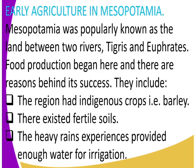Now we must get to know what Mesopotamia is and where it was found. Mesopotamia was popularly known as the land between two rivers — River Tigris and River Euphrates. These were the two rivers that Mesopotamia lay between. Food production began here; this is where food production started.